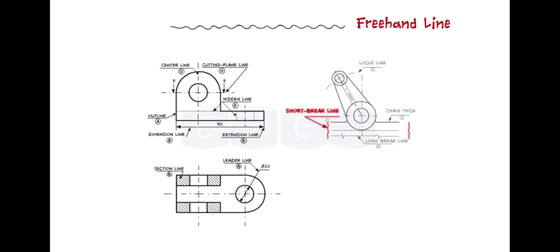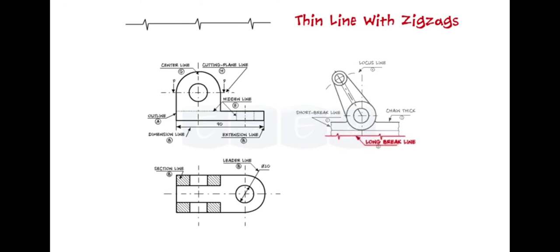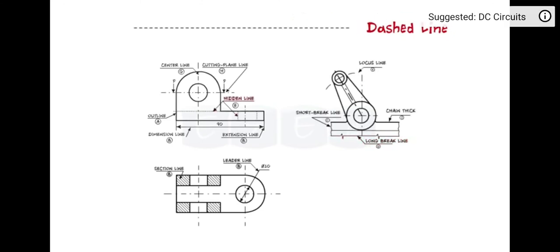This line is used to show short breaks or irregular boundaries. Next is the continuous thin line with zigzags; this line is used to show long breaks. Next is the dashed line; this line is used to show hidden edges of the main object.